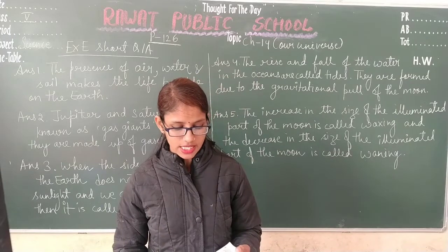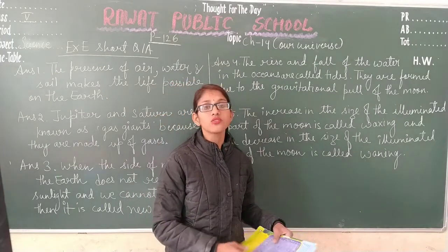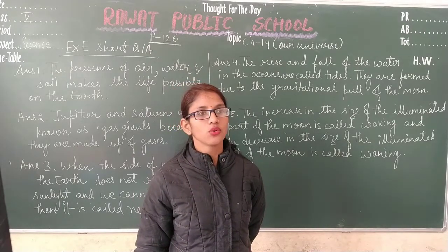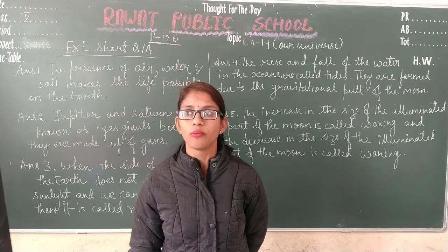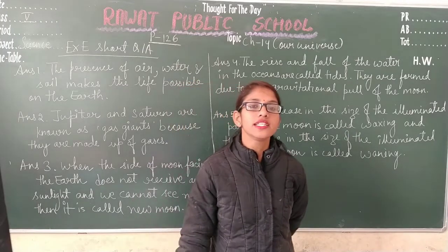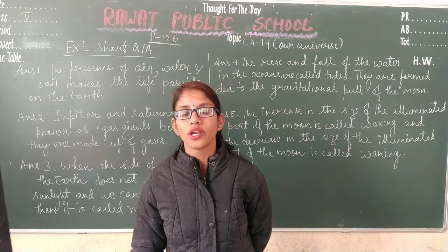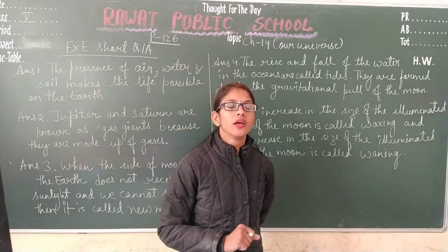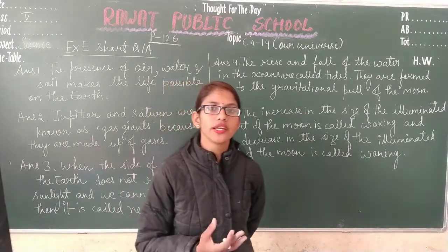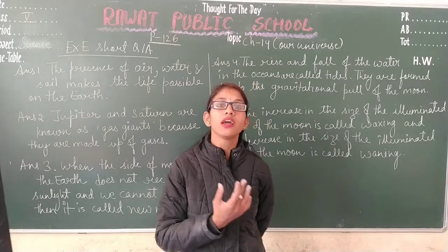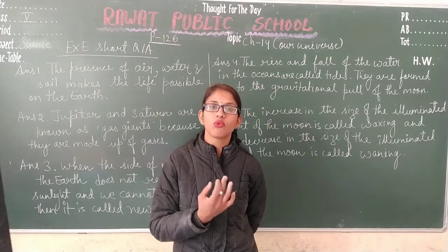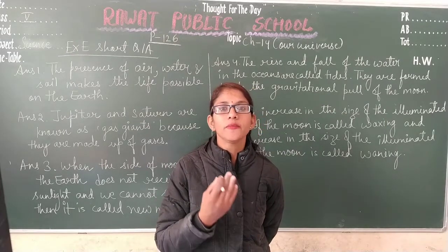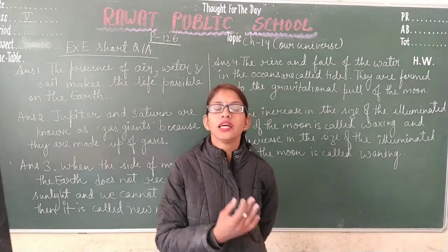Question number 4 is: what are tides and how are they formed? In this question, you have to define tides and explain how they are formed. The rise and fall of the water of the ocean are known as tides, and they are formed due to the gravitational pull of the moon. Although the gravitational pull of the sun also exists, the moon is at a closer distance from the earth, so the moon's gravitational pull affects the ocean water on earth's surface.